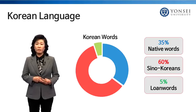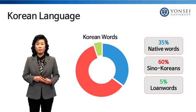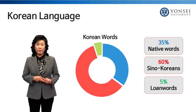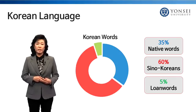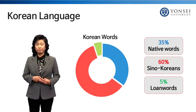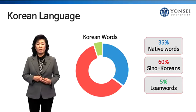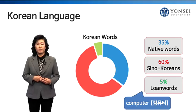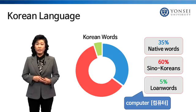The Korean vocabulary is comprised of 35% native words, 60% Sino-Korean words, and 5% loan words, mostly from the English language. Loan words are pronounced differently depending on the sound patterns in Korean. For instance, the word 'computer' is pronounced 'kompyuteo' in Korean.